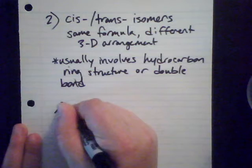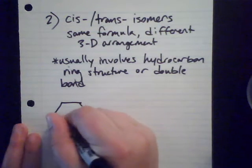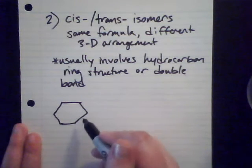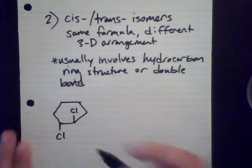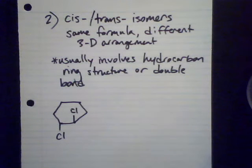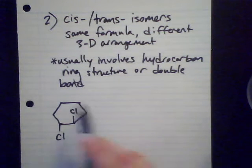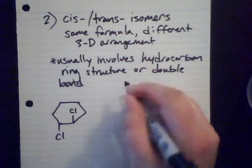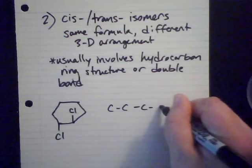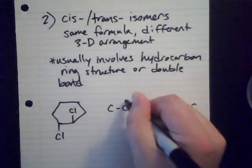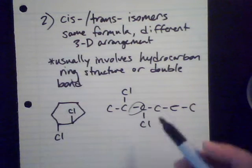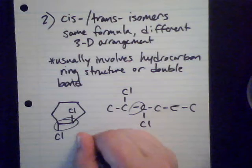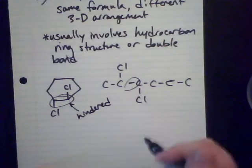I'm going to use a skeletal diagram. If I have a ring structure — this is a cyclohexane because it has six carbons, one at each point — if I have something sticking off the ring on this side and this side, because of the way this ring is bonded together, one arrangement can't easily become the other. You can sort of rotate, but it's more hindered because of the ring, as opposed to a single bond in an open chain where the chlorines could freely rotate. When that single bond is in a ring, it's more hindered.